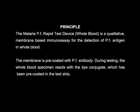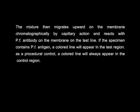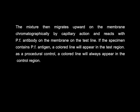During testing, the whole blood specimen reacts with the conjugate which has been pre-coated in the test strip. The mixture migrates upward on the membrane chromatographically by capillary action and reacts with Plasmodium falciparum antibody on the membrane at the test line. If the specimen contains Plasmodium falciparum antigen, a colored line will appear in the test region. As a procedural control, a colored line will always appear in the control region.